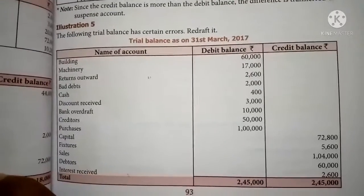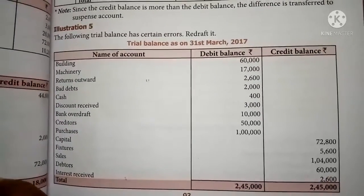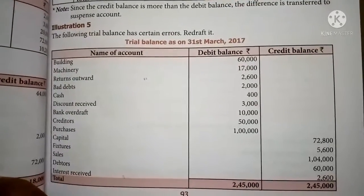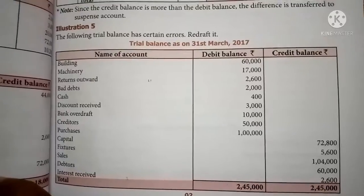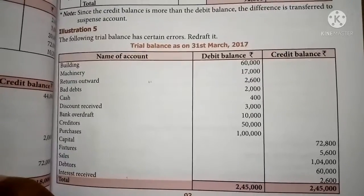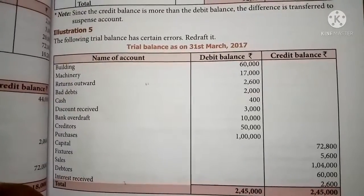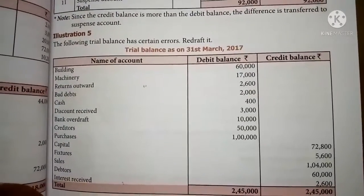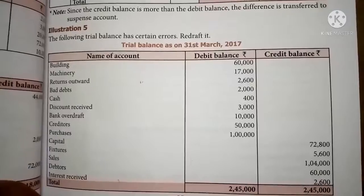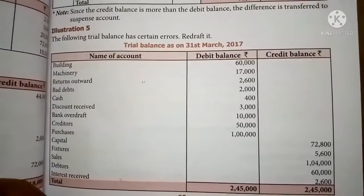In the given trial balance, building — the amount is shown in the debit column. This is right because building is property and property amounts should be shown in the debit column. Machinery is also property, 17,000 — also written in the debit column, so it is also right. Return outwards, 2,600 — that means purchase returns. Purchase returns should be shown on the credit column as per the specimen, but the amount is written in the debit column, so it is wrong.